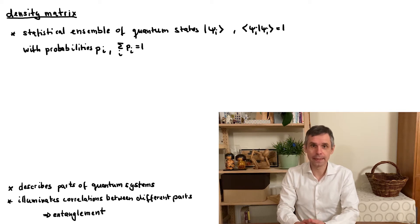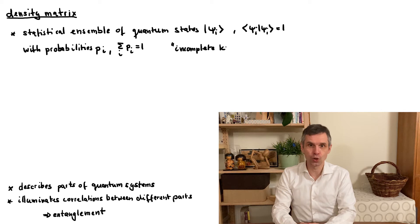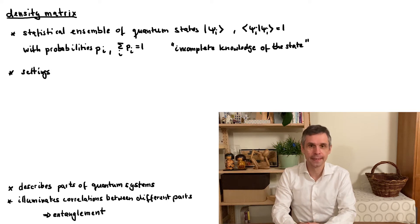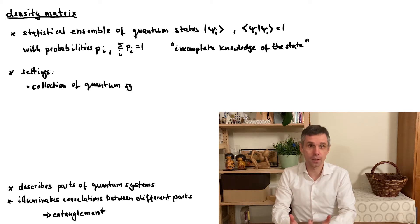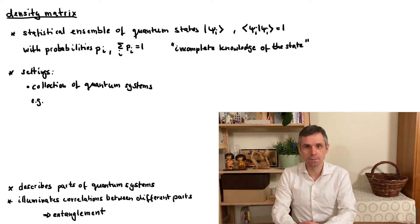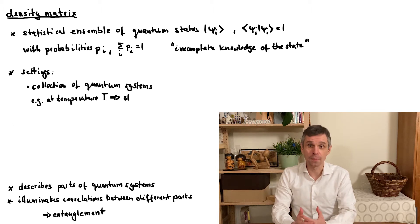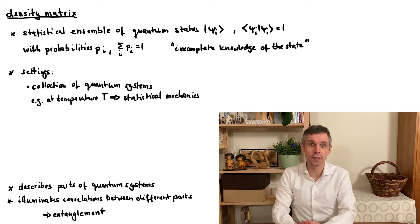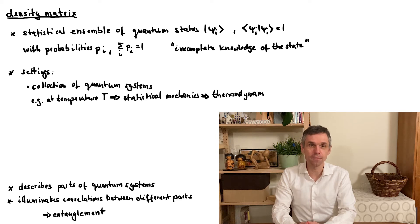And also that all the probabilities add up to 1. So this already defines what we mean by a statistical ensemble. These probabilities can be of any origin — they just capture some incomplete information of the state, and this has a very wide range of applications. For instance, we could have a set of quantum systems which are all of the same type, such as atoms in a gas, and they can all be in different physical states, perhaps because we are talking about the system at a given temperature. Considerations such as this form the basis of statistical mechanics, where we would assign the probabilities according to the Boltzmann weights, depending also on the energy of the states.